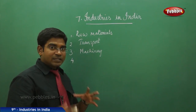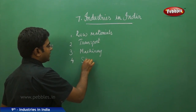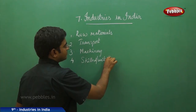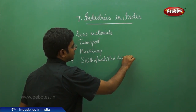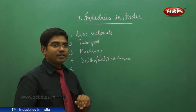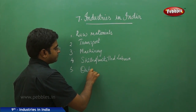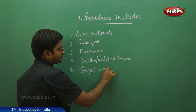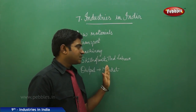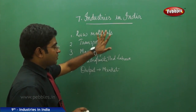We also need skilled persons — people to work and convert the raw materials — that is known as skilled or unskilled labor. So after raw materials, transportation, machinery, and skilled and unskilled labor, we design things and get the output. This output reaches the market. Raw materials, transport, machinery, skilled and unskilled labor, and output — these are the main factors for any industry.